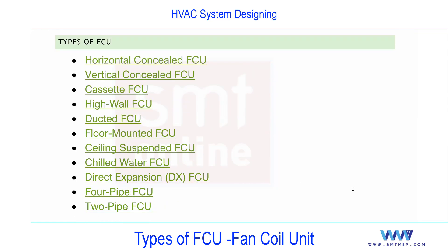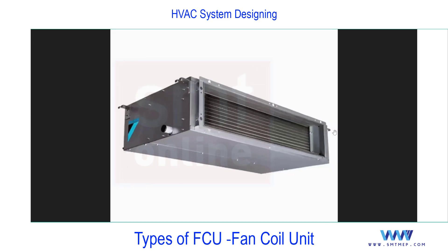The first type in the list is the horizontal concealed FCU. 'Concealed' means it is not visible. This unit is installed above a false ceiling, so it is hidden from view. It has a short piece of duct connected to its supply mouth, which runs to a grill in the gypsum board of the false ceiling. In hotel rooms or residential spaces this unit will always be concealed.